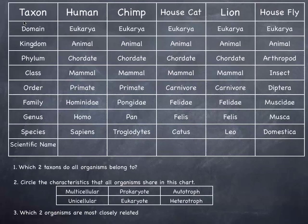You can see how the others compare to that — the chimp, the house cat, the lion, and the housefly. Now you have a mistake on yours. Under house cat it says 'domesticus,' but that's actually not the species for house cat. It's actually 'catus.'